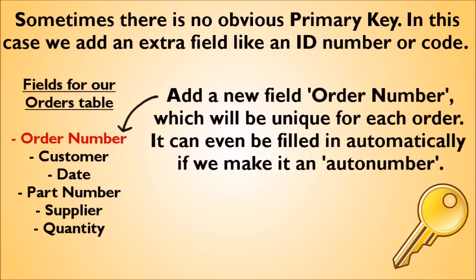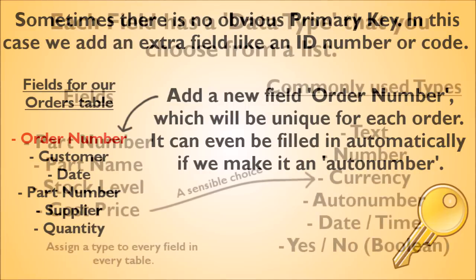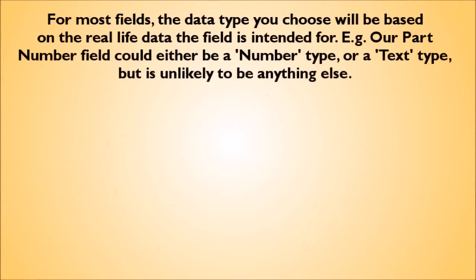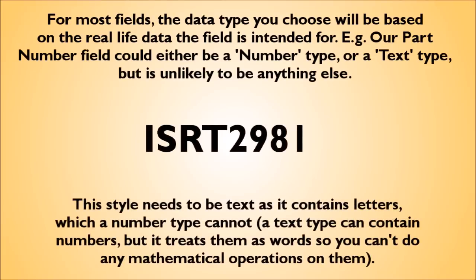For tables where a natural unique identifier doesn't exist, you can invent ID numbers or codes for internal use. In Access there is something called an autonumber field that you can use as the primary key, which just assigns a new sequential number to each record. For each field in the table you need to pick a data type — such as a number, text, a date or time, or currency. Within each type you can further specify the exact nature of the data, such as the number of characters for text. Your existing part numbers are likely to help you decide the data type; for example, an eight-character text string.